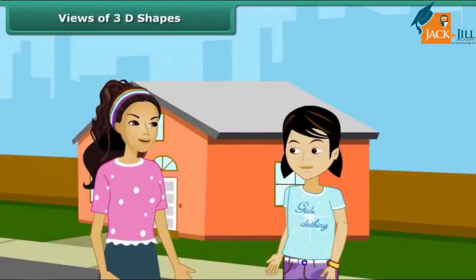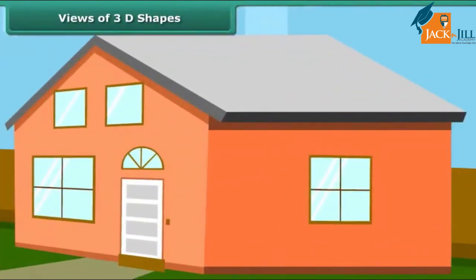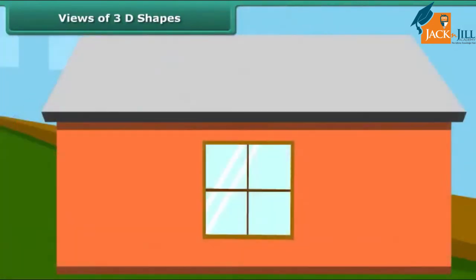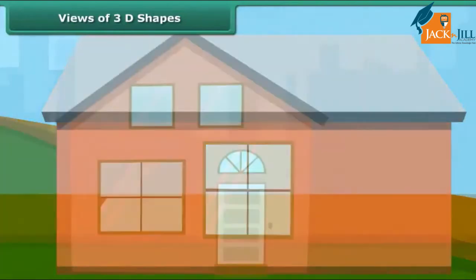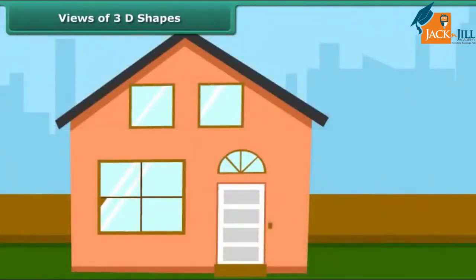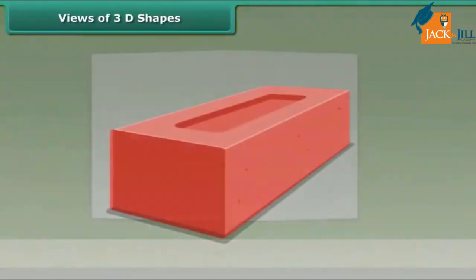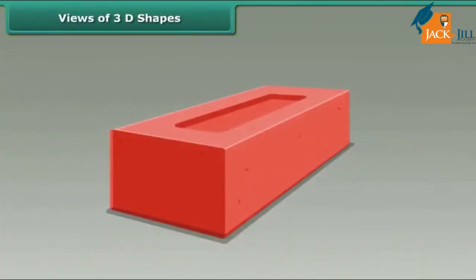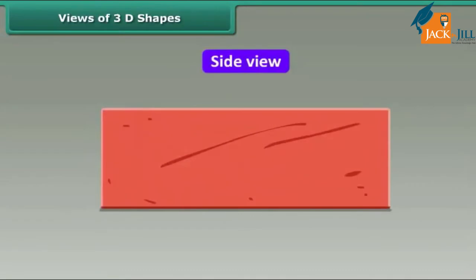Do you know that three-dimensional objects look different from different positions? Look at our house. It can have many views. This is the side view of the house. This is the front view. And this is the top view. Similarly, this brick can have different views: top view, side view, and front view.